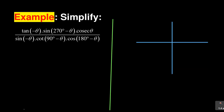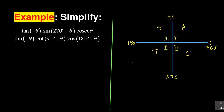The first thing you need when solving such a question is your CAST diagram. Remember in your CAST diagram we say: All Students Take Chemistry. This is my first quadrant, second quadrant, third quadrant, and fourth quadrant. Starting from zero, then 90, then 180, then 270, and after a complete revolution it becomes 360.